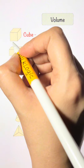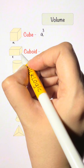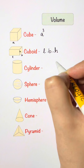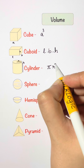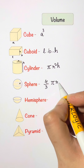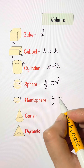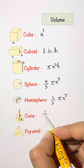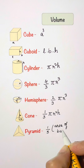Volume of a cube with side A is A cubed. Volume of a cuboid with side lengths L, B, and height H is length into breadth into height. Volume of a cylinder with height h and radius r is pi r squared h. Volume of a sphere with radius r is four-third pi r cubed. Volume of a hemisphere with radius r is two-third pi r cubed. Volume of a cone with radius r and height h is one-third pi r squared h. Volume of a pyramid is one-third area of base times height.